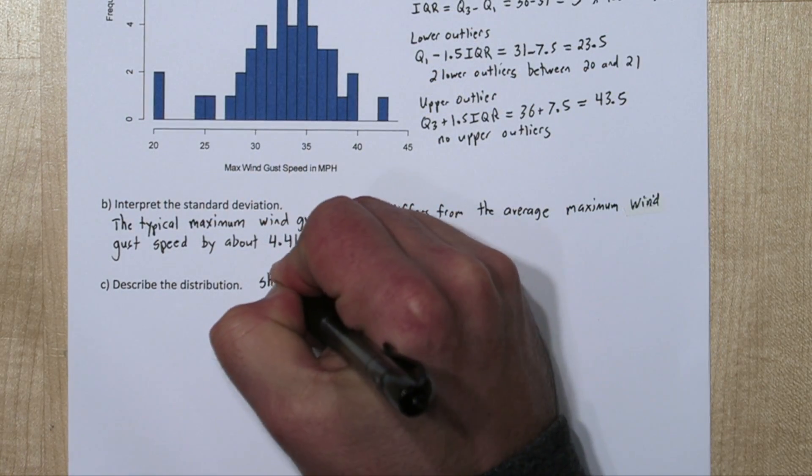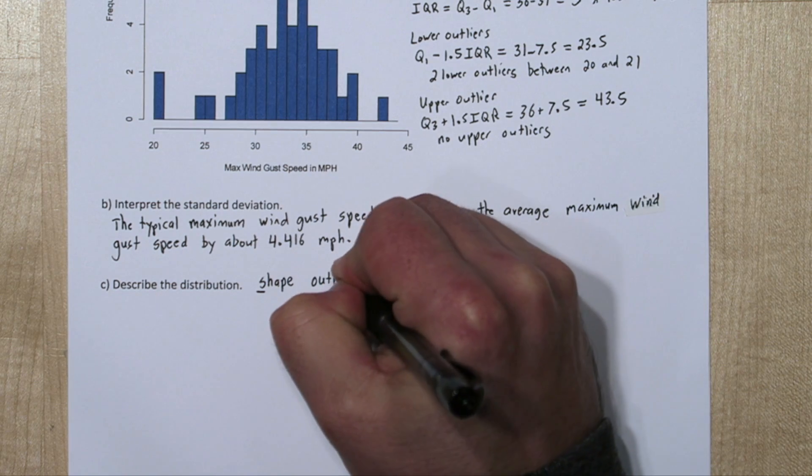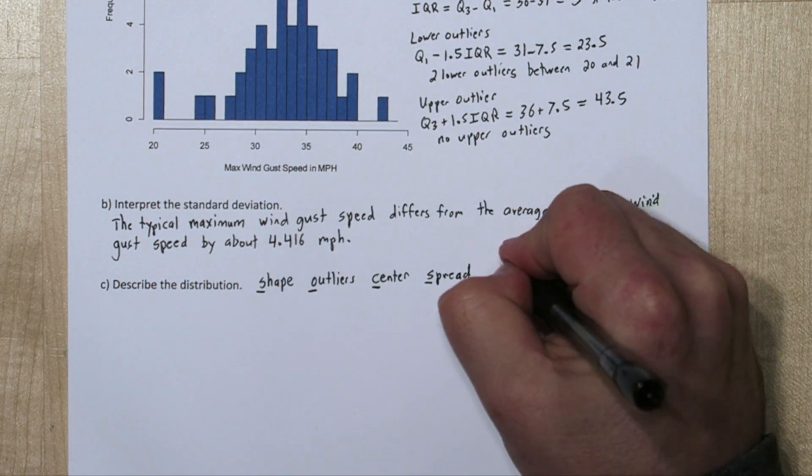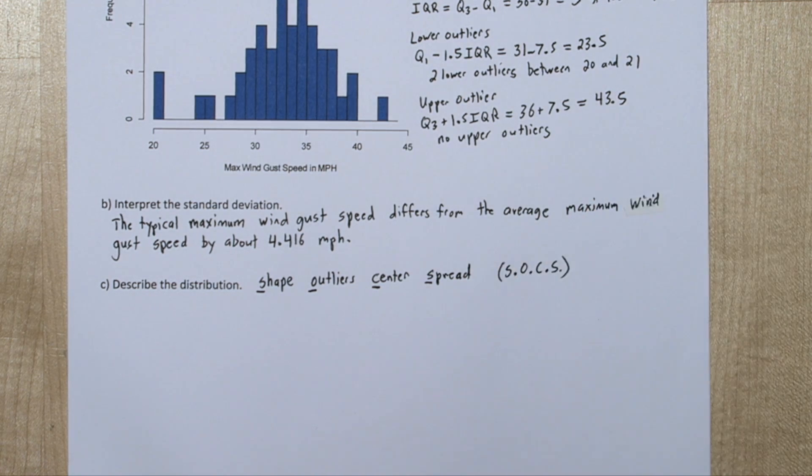Now anytime you're asked to describe a distribution, remember the acronym SOCKS. It stands for shape, outlier, center, and spread, but you don't have to describe them in that order.